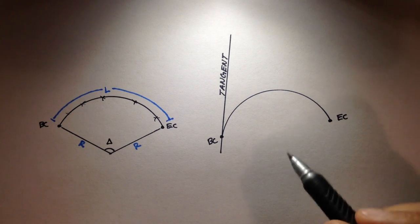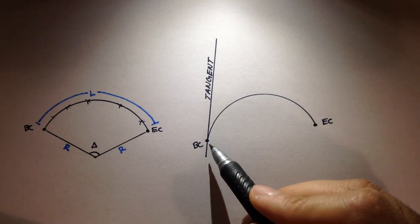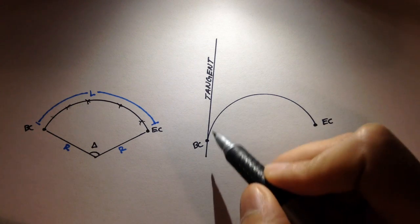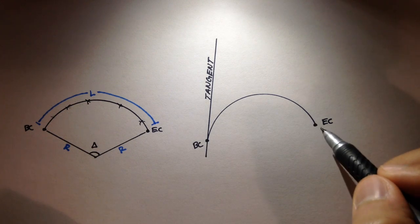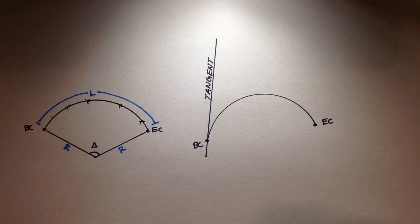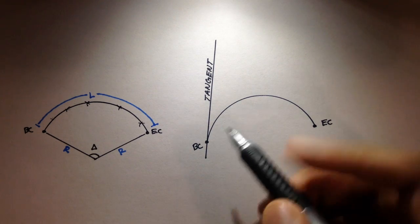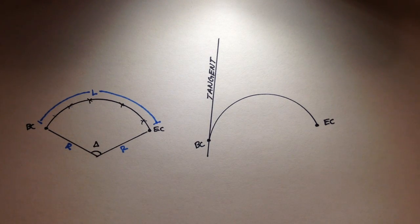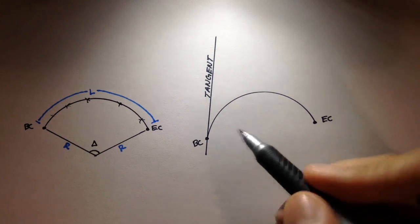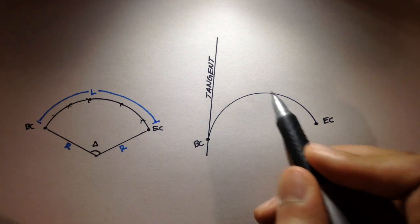Here on the right side, we have this generic horizontal curve with the points BC and EC. I already drew out the tangent line for the BC station. I want to look at this curve and show how we can pick any point along this curve and use geometry and trigonometry to find the deflection angle and the chord length from BC to that point.